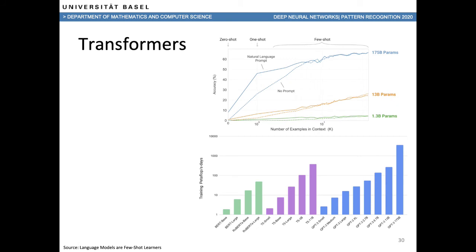The paper also mentions training compute in petaflops per day. GPT-3 with its 175 billion parameters is all the way to the right on that scale, while the base or large BERT is still many orders of magnitude less complex to train than GPT-3.